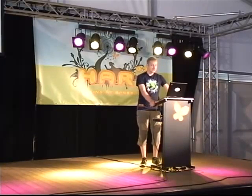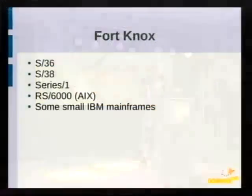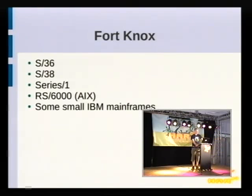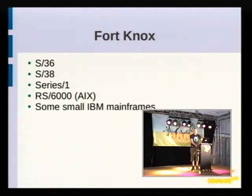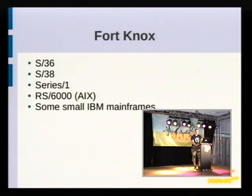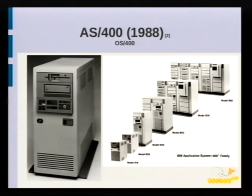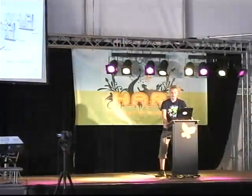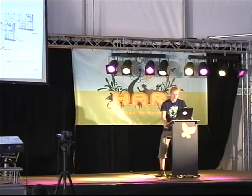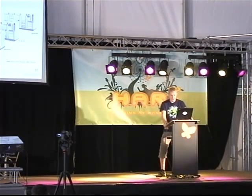Then IBM started a project called Fortex, and they wanted to combine some of their mid-range systems into one new system. They even went so far as declaring the System 38 as being non-strategic and discouraged people from even buying it — so that was not a good thing for Rochester. The project failed, leaving Rochester basically with nothing. But they did have a backup plan, and that was Project Silver Lake. In that project they created the AS400, which was actually in many ways just a new implementation of the System 38. You can see pictures of the first systems — there are small systems and big ones.